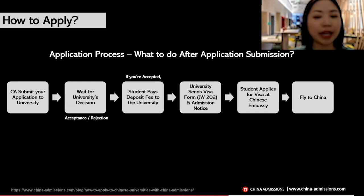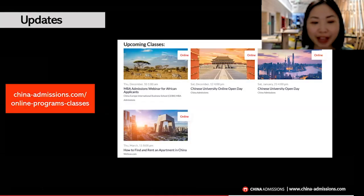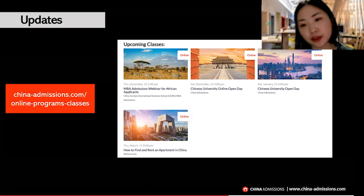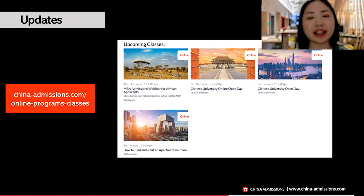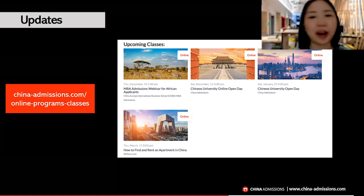If classes are online, the university will guide you through an online registration day to get you familiar with the online learning process. Do not worry — the university will prepare the best classes for you. To get more updates from China Admissions, check our website. For example, on January 23rd, 2021, we will have another Chinese universities online open day with around eight universities giving 12-minute presentations. It's a great opportunity to learn about programs and cities — some students prefer big cities like Shanghai or Beijing, while others prefer smaller cities like Xi'an, Qingdao, or Jinan.